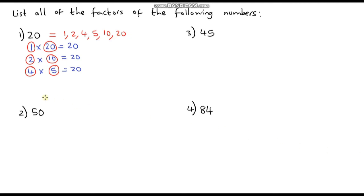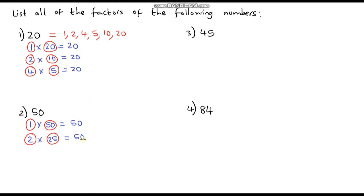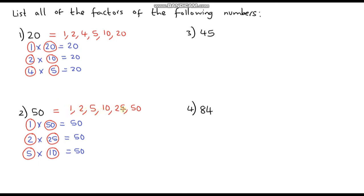Let's move on to question 2, which is 50. So we start off at 1 again: 1 times 50 is 50. Now 2 — well 50 is even, so 2 is definitely a factor of 50, and 2 times 25 is 50. So 3 is not a factor of 50, and 4 is also not a factor. But 5 is, and 5 times 10 is 50. 6, 7, 8, 9 are not factors. And 10 is, but we're already back at 10. So the factors of 50 are: 1, 2, 5, 10, 25, and 50.